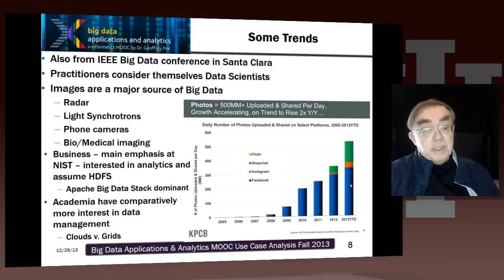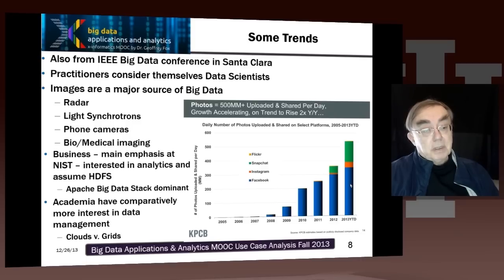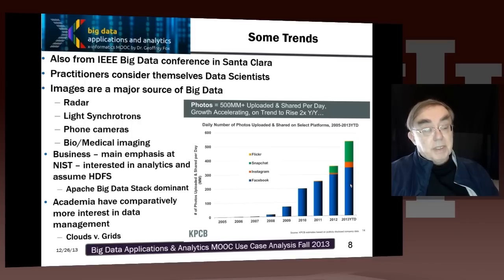If you look at business interest in big data, a lot of it is focused on the so-called Apache big data stack, which we'll discuss in the third unit of this section on technologies. Business is incredibly interested in this for support of data analytics and its use of the so-called Hadoop data file system. That Apache cloud stack was strikingly pervasive — because if you go to more academic meetings, I had not seen that. I got more discussion of things like data movement, data management, and the roles of clouds and grids.